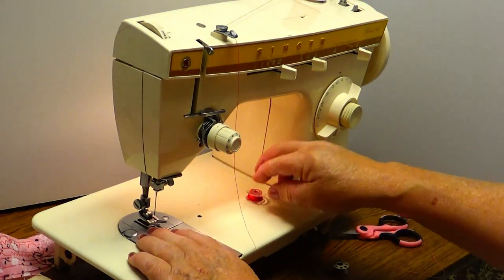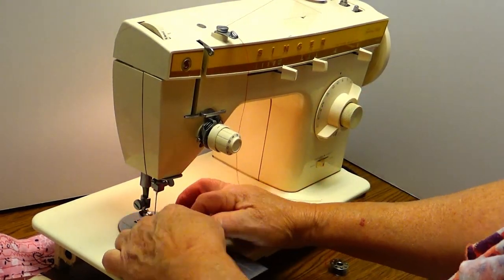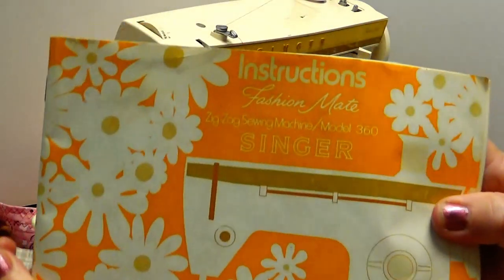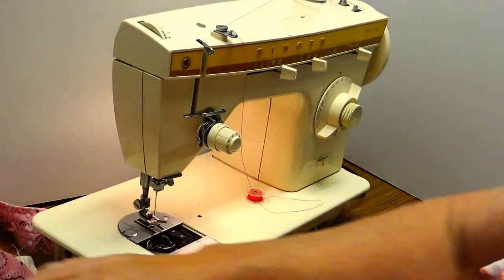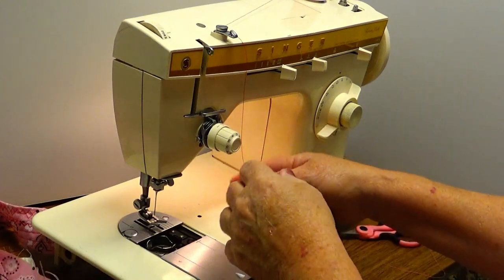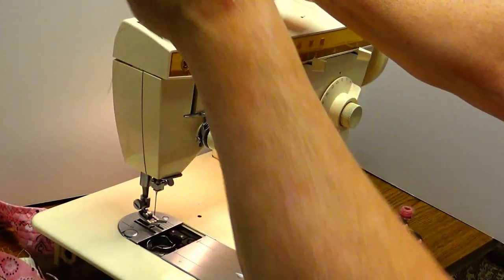So this sewing machine is just going to take those little narrow bobbins like that, and I'm sure to tell you in the manual. I do have a copy of the manual here. I haven't looked through it but I'm sure it tells you what kind of bobbins you need to use.